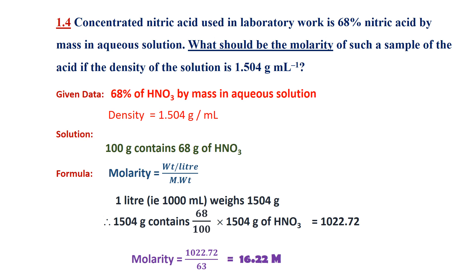So in this 1 liter, that is 1504 gram of nitric acid aqueous solution, it contains 68 divided by 100 into 1504 gram of nitric acid. Therefore, 1 liter or 1504 gram of solution contains 1022.72 gram of nitric acid.